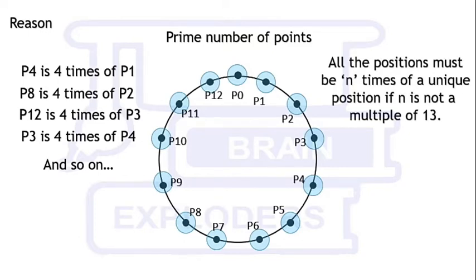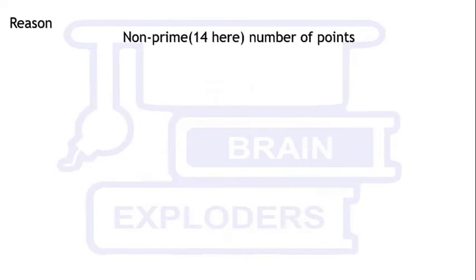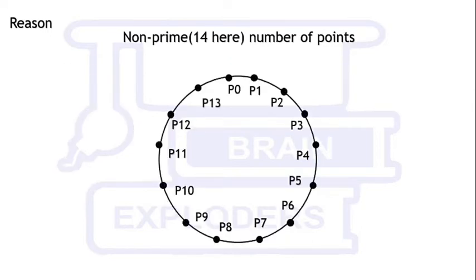And hence all the positions must be n times of a unique position if n is not a multiple of 13, because if n is a multiple of 13, then P0 is n times of all the positions. On the other hand, if there are non-prime number of points, then the product positions may repeat.